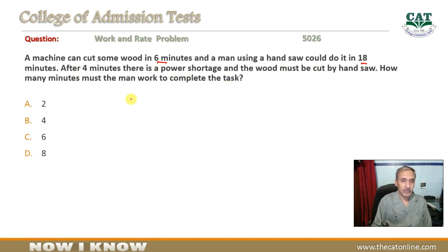अब आप देखें कि यहां पर directly ratio मौजूद है कि यह मशीन का time है और यह by hand है। जो मशीन जिस काम को six minute में करती है उसको by hand 18 minute में किया जा रहा है। तो चार minute के बाद power shortage हुई इसका मतलब है दो minute का काम बच गया क्योंकि